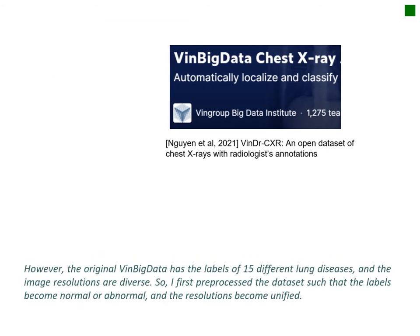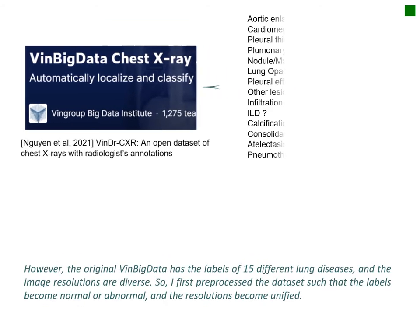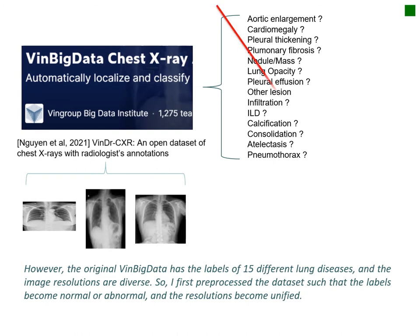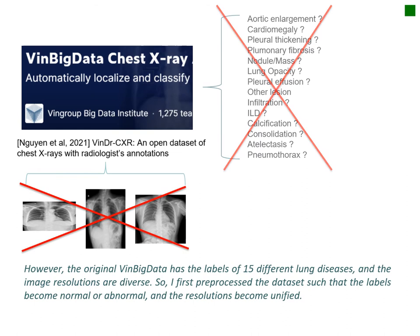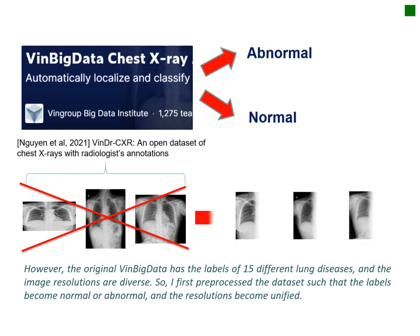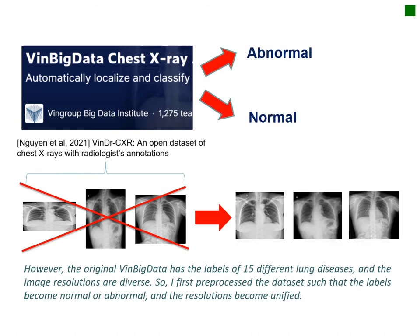However, the original VinBigData has labels for 15 different lung diseases, and the image resolutions are diverse. So, I first pre-processed the dataset such that the labels become either normal or abnormal, and the resolutions become unified.